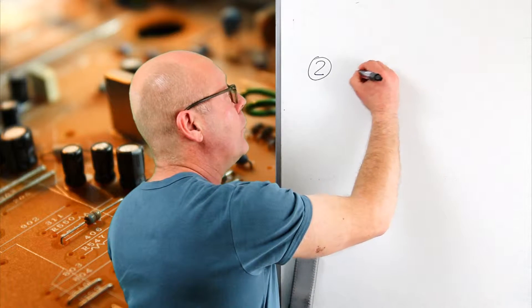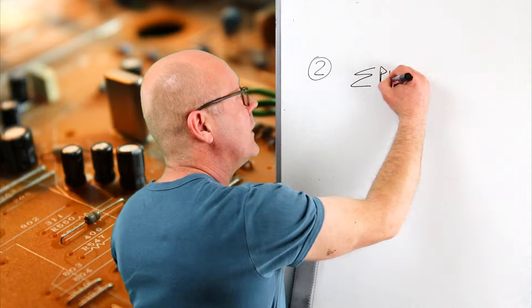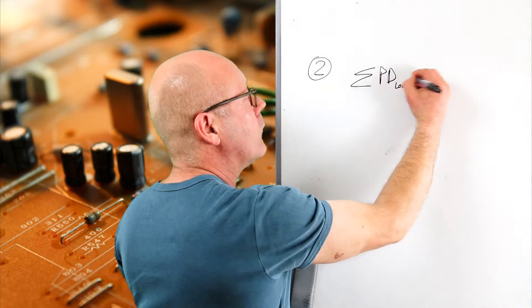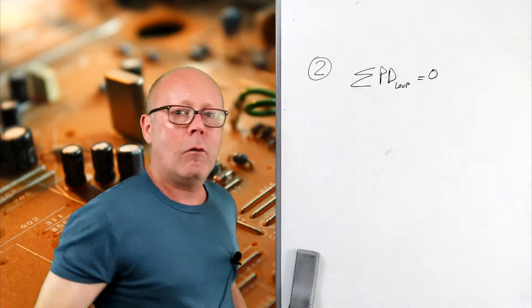The second law of Kirchhoff states that within a loop, the sum of the potential differences in the loop equals zero. What does this mean?